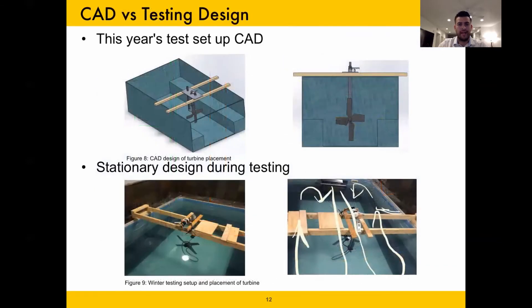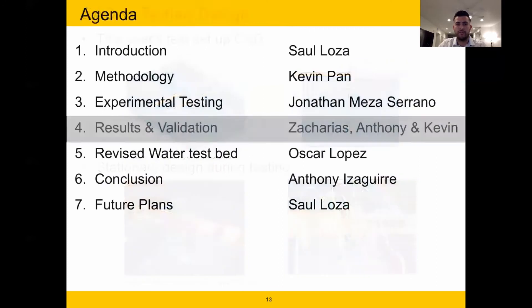On the screen, the CAD and testing setups are shown. As one can see, the testing setup is very similar to the CAD design. Although a stationary design, it was made to allow the setup to be moved back and forth along the length of the pool. This would allow to test at varying distances from the exit of the fluid propulsion system. In addition, the turbine was submerged at the appropriate height from the bottom of the pool and placed at the center of the pool to allow the formation of a fully developed fluid profile and boundary layer. Next, Kevin will be introducing the results.